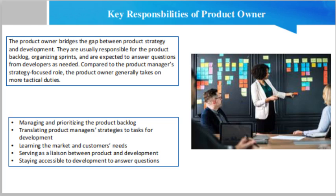Compared to the product manager's strategy-focused role, the product owner generally takes on more tactical duties. So what are a product owner's major responsibilities? The first is managing and prioritizing the product backlog. The product backlog is an essential document for agile organizations because it captures and prioritizes the development team's user stories to work on in upcoming sprints. Product owners spend much of their time reviewing the backlog of development tasks and prioritizing what developers should take on next, helping ensure the team executes according to strategic goals.